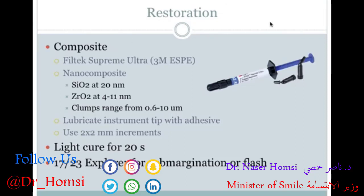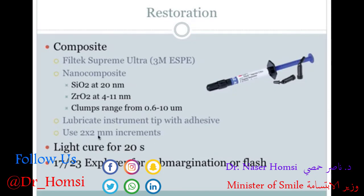For composite material, there are many systems to choose from. Shape everything as best as possible before curing to minimize finishing and polishing later. Don't play around too much with the composite — the more you work it, the more chance you introduce voids and imperfections. Use big sweeping motions and work efficiently to avoid air bubbles. You can lubricate the instrument tip with adhesive and use smaller increments, light curing each one, since large bulk fills may not cure fully through and result in more shrinkage.